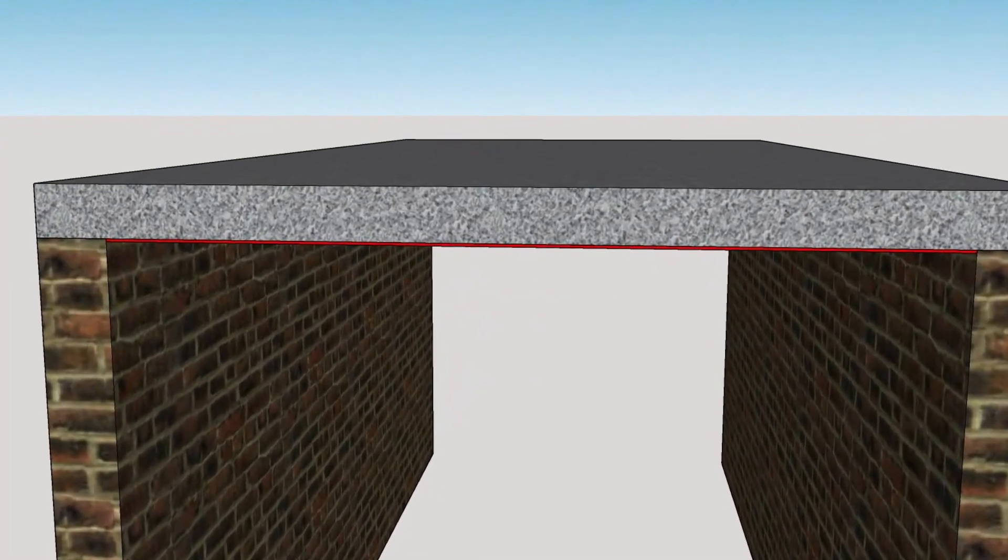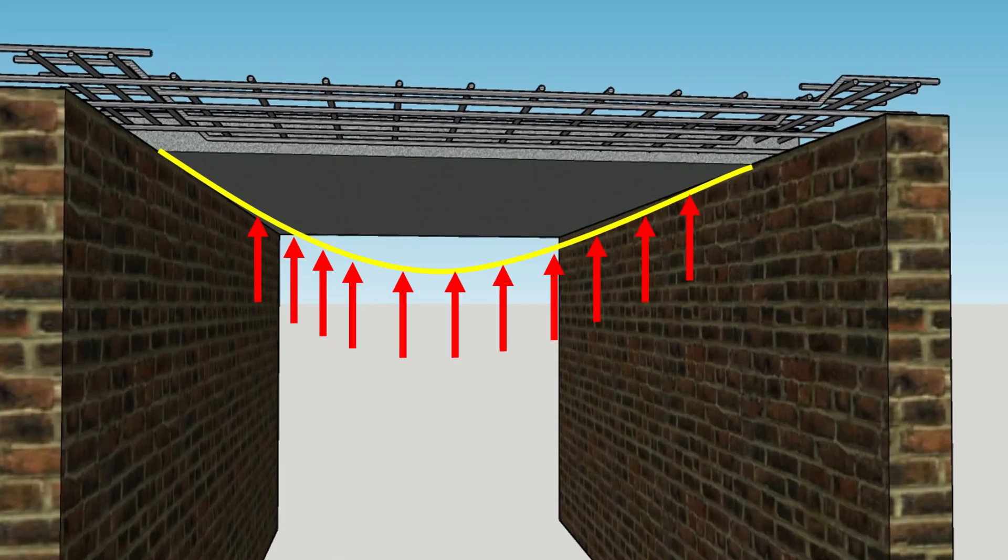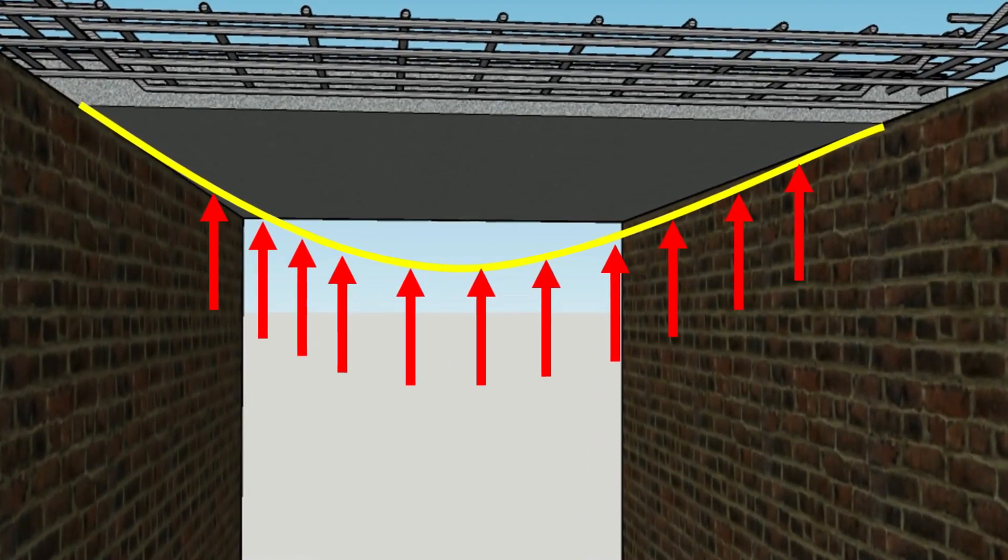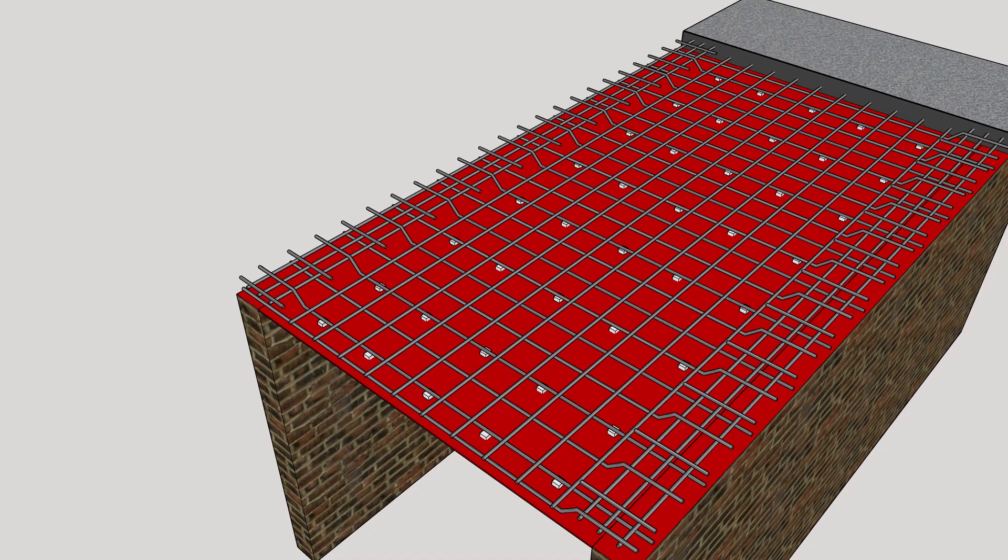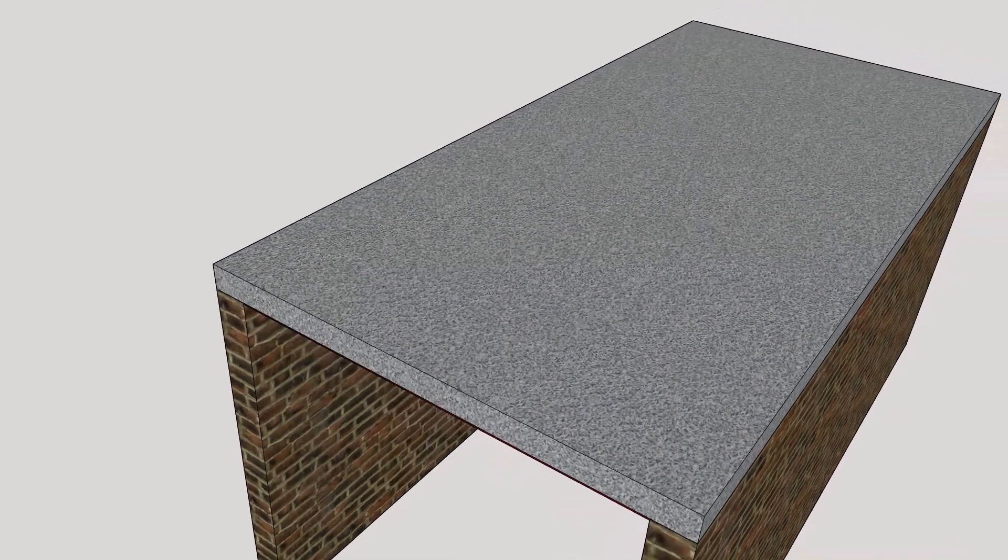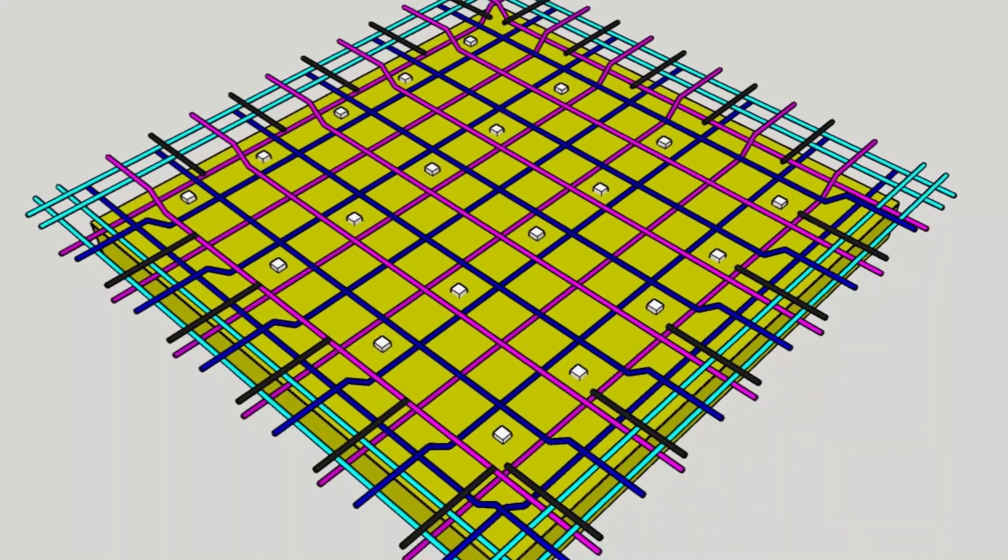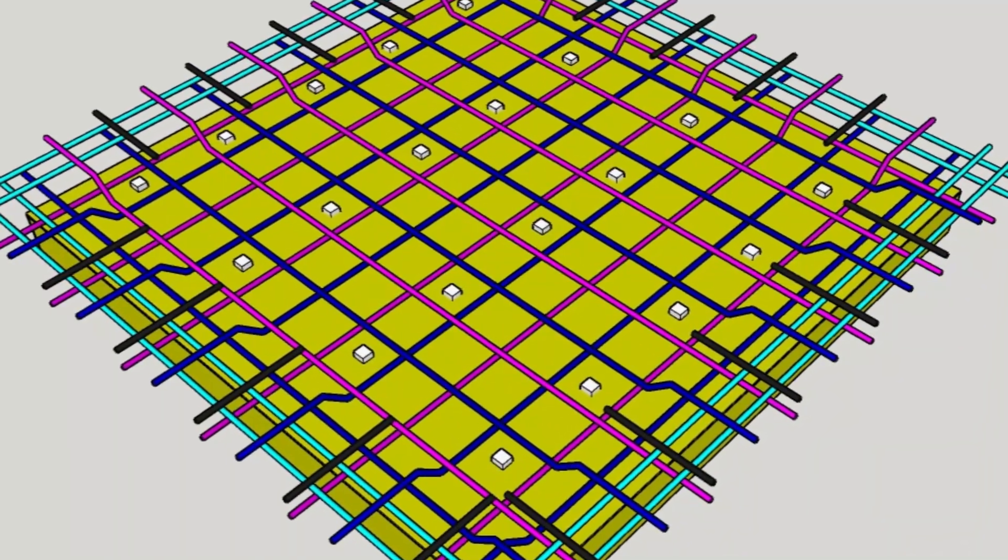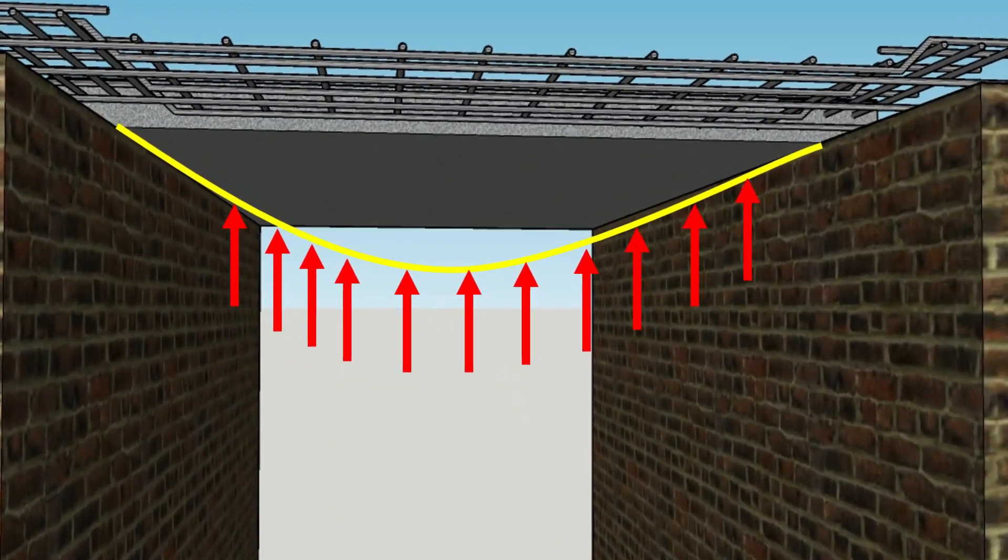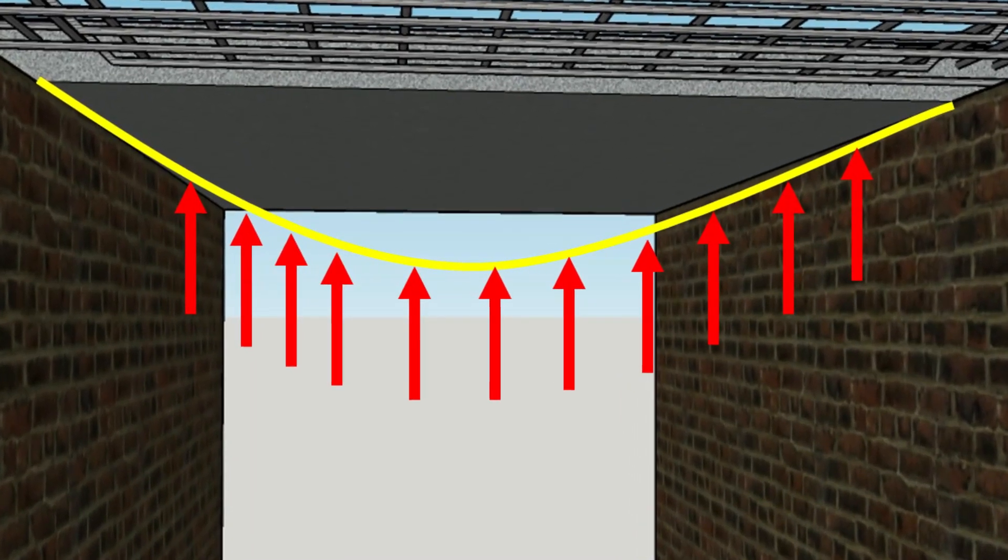A one-way slab is an RCC slab that's supported on two opposite sides and primarily designed to resist bending in just one direction. These slabs are usually rectangular in shape with a thickness that changes based on the required load and span. Unlike two-way slabs which are supported on all four sides, one-way slabs rely on support from only two sides making them specifically built to withstand bending stresses along a single axis.